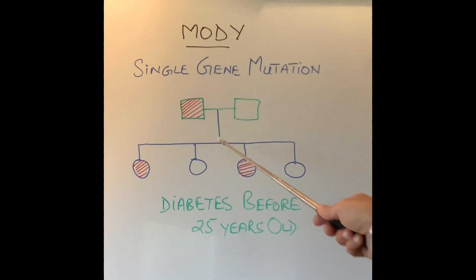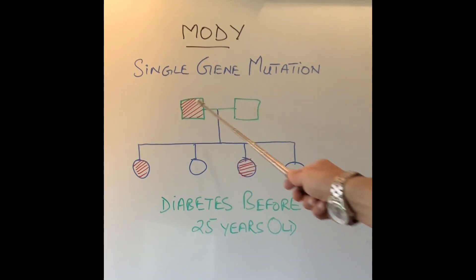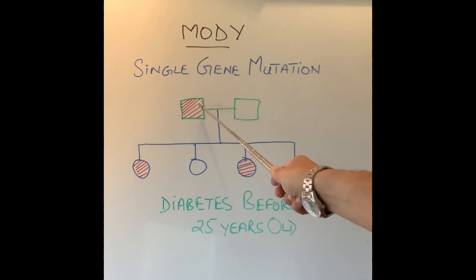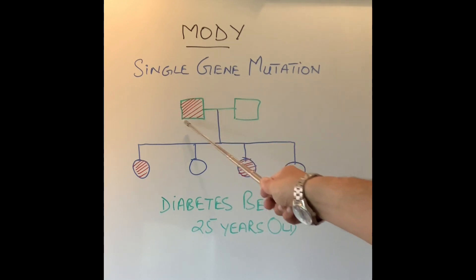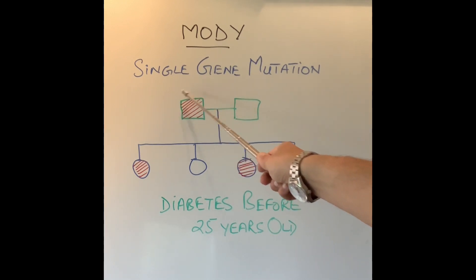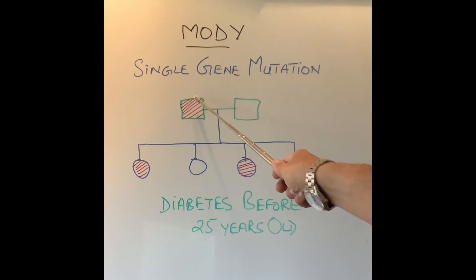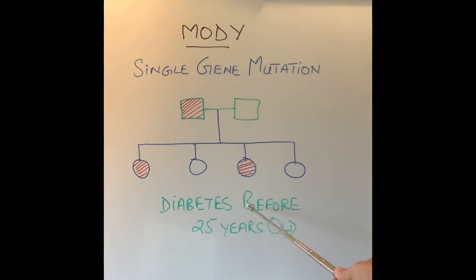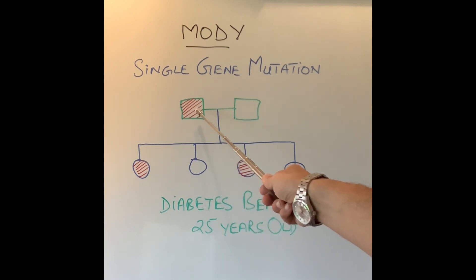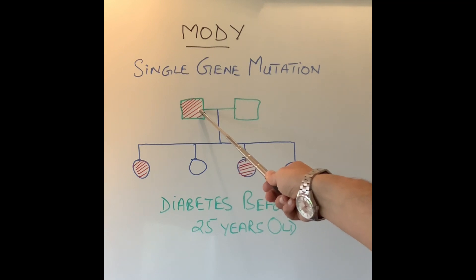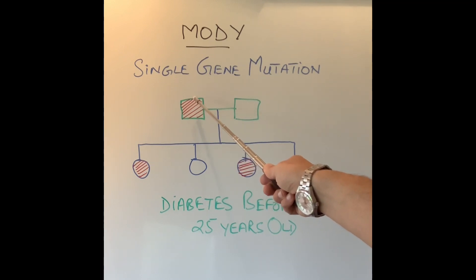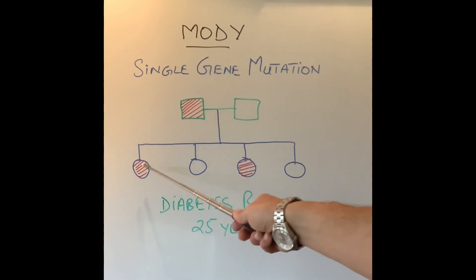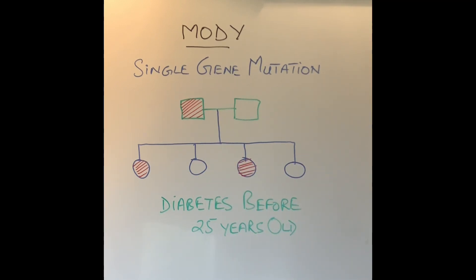Why does that happen? So these are two parents — mum or dad. One of them has a defective gene that causes MODY. If they have four children, half of them will carry this gene. So the parent who has MODY will pass this defective or mutated gene to two out of four children — that is 50 percent. If there are six children, three out of six will develop MODY.